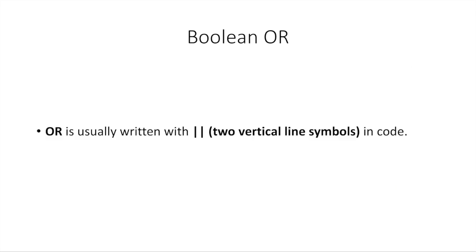In code, OR is usually written with two vertical line symbols. Depending on where your keyboard is, this is usually next to or around the enter key. On my laptop it's above the enter key, but it depends on which keyboard you have. To type that, you just have to hold shift and then type that key which has the little vertical line on it, on an American keyboard at least. So this is usually how we write OR in code — it's just two vertical line symbols.